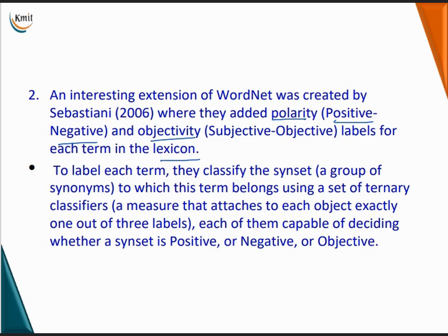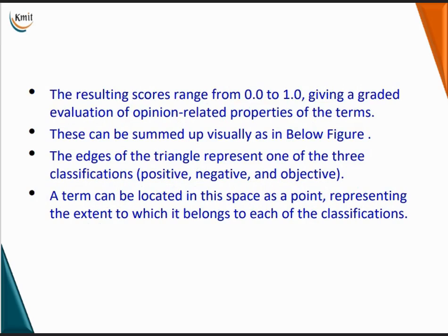For each term, they classify the synset — a group of synonyms to which the term belongs — using a set of ternary classifiers, meaning three labels. Each classifier decides whether a synset is positive, negative, or objective. The resulting scores range from 0 to 1, giving a graded evaluation of opinion-related properties of the terms. This can be summed up visually in a figure where the edges of a triangle represent the three classifications: positive, negative, and objective.